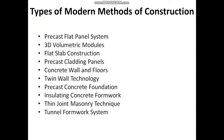In the modern world of construction, there are a number of methods in practice. These methods ensure the sustainability of construction projects. Some of the most popular methods are: precast flat panel system, 3D volumetric modules, flat slab construction, precast cladding panels, concrete walls and floors, twin wall technology, precast concrete foundation, insulating concrete formwork, thin-joint masonry technique, tunnel formwork system, and others.